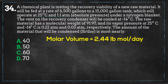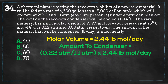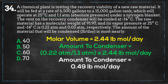Now that we have the volume of the material in the tank, we can use partial pressures to determine the amount of material that is evaporating and condensing. First, let's focus on the amount of material that will go to the condenser. At 25 degrees Celsius, the vapor pressure of the material is 0.22 atm, so we take a ratio of the vapor pressure and the tank's absolute pressure, then multiply it by the total volume in the tank, and we get about 0.49 pound-moles of material that has evaporated into the condenser.